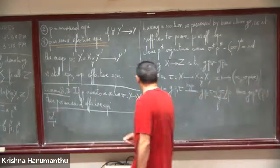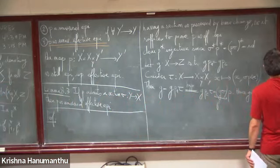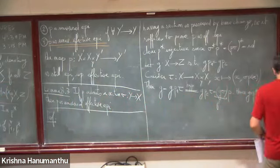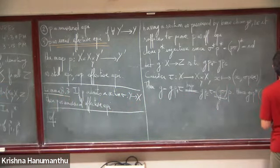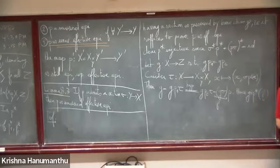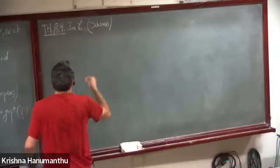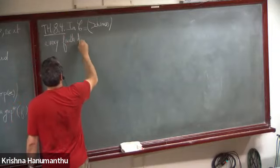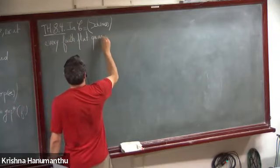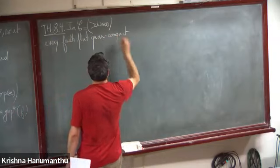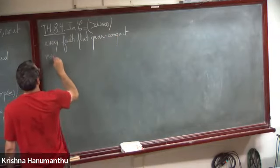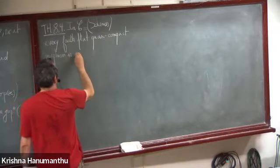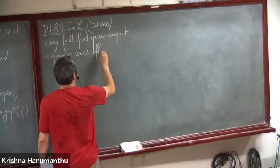As a spoiler for the rest of this lecture: the theorem (8.4 in my notes) states that in the category of schemes, every faithfully flat quasi-compact morphism is a universal effective epimorphism.